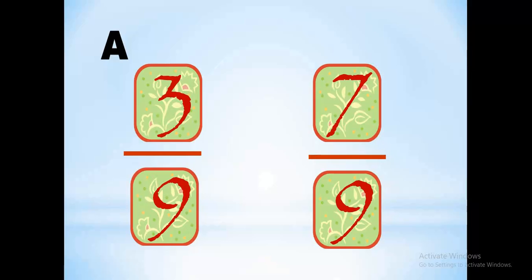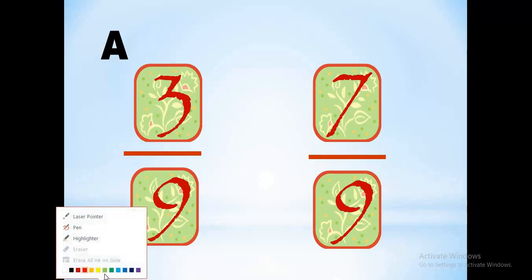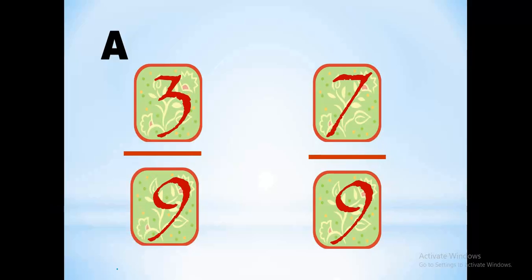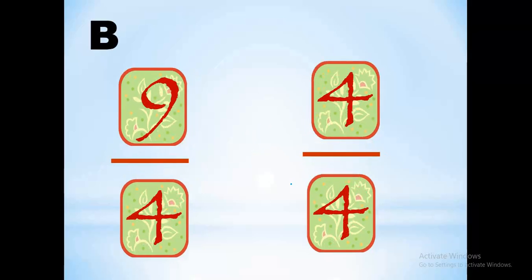Now look at this example: 3 over 9 and 7 over 9. We also have the same denominator, so we look up to the numerator — 3 and 7. Which number is the highest? It's 7, so 7 over 9 is the biggest fraction. Now we have 9 over 4 and 4 over 4 — same denominator, numerators are 9 and 4. The highest is 9, so 9 over 4 is the biggest fraction.